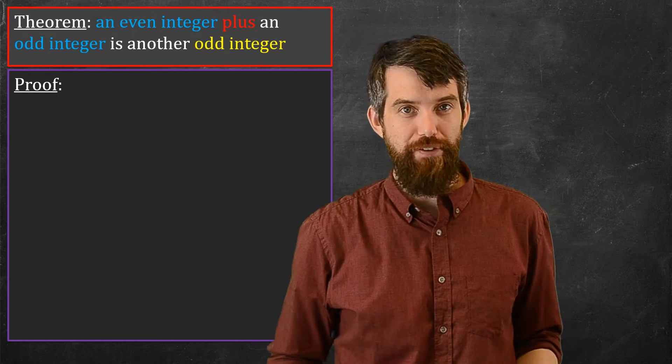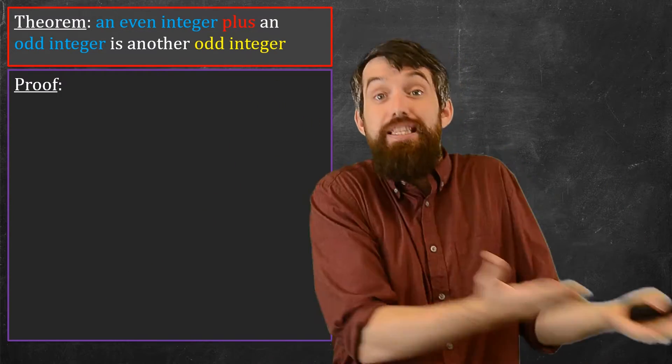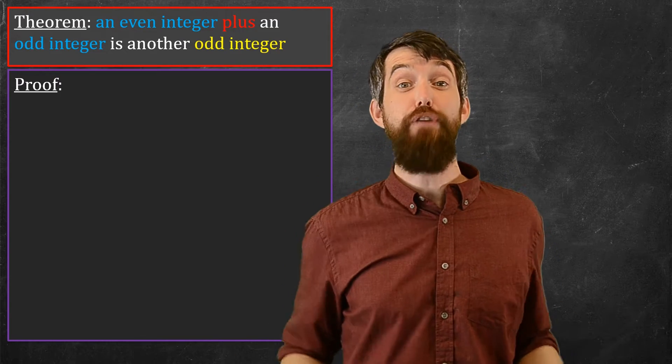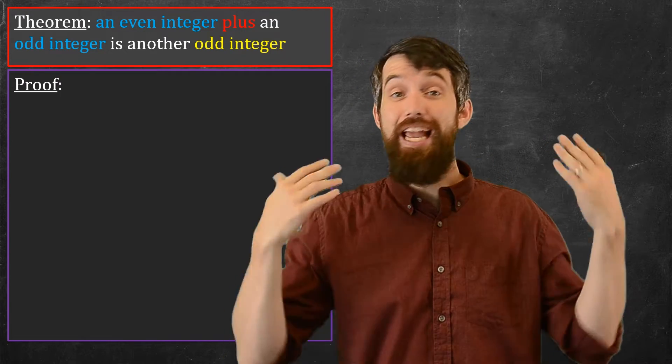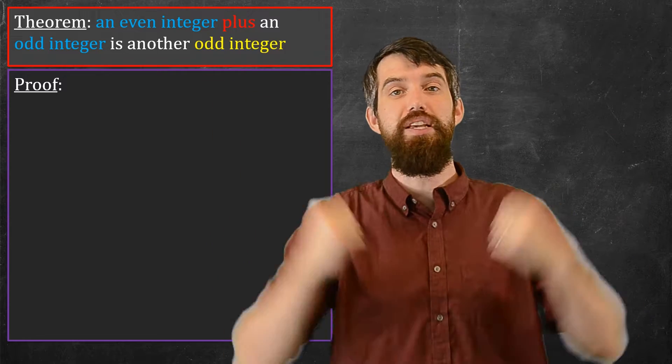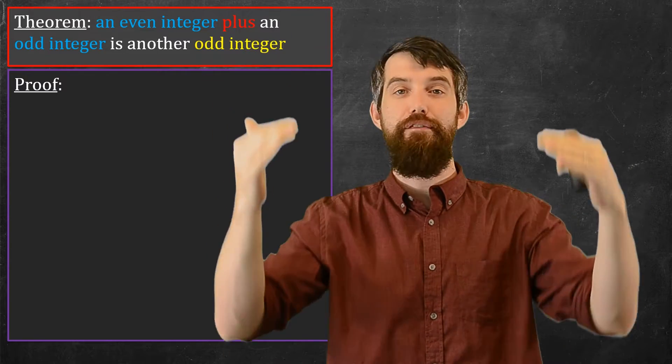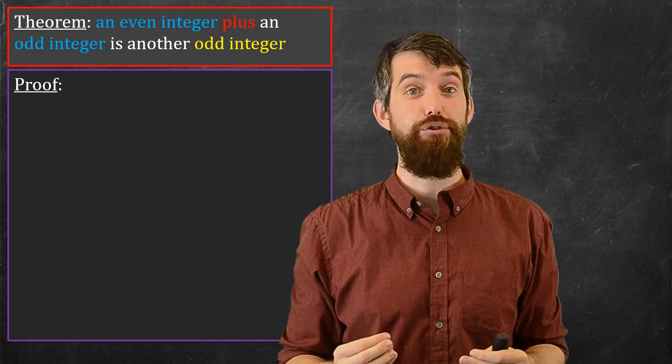So when I want to do this proof, if it goes if some assumptions, then a conclusion, my proof should follow that basic logic when I'm doing a direct proof. I want to begin with the assumptions, I'm going to go on and follow some process, and then I'm going to end with the conclusion.